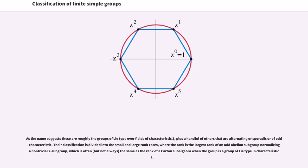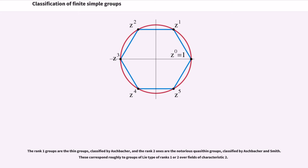Their classification is divided into the small and large rank cases, where the rank is the largest rank of an odd abelian subgroup normalizing a non-trivial 2-subgroup, which is often but not always the same as the rank of a Cartan subalgebra when the group is a group of Lie type in characteristic two. The rank one groups are the thin groups classified by Aschbacher, and the rank two ones are the notorious quasithin groups classified by Aschbacher and Smith. These correspond roughly to groups of Lie type of ranks one or two over fields of characteristic two.